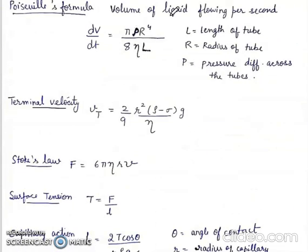Poiseuille's formula volume of liquid flowing per second. dv by dt is equal to pi by 8. P r to the power 4 by eta L. P is the pressure difference across the tubes. R is radius of tube. L is length of tube. Eta is coefficient of viscosity.